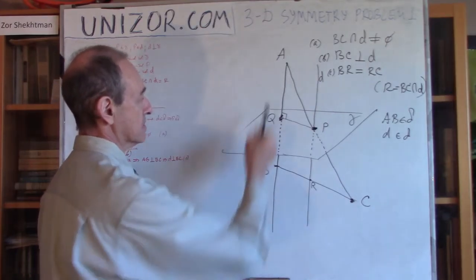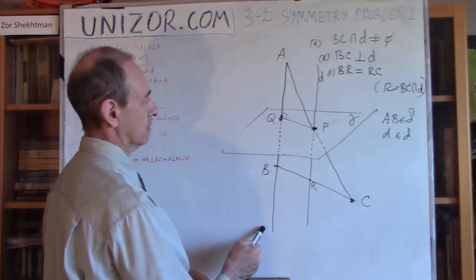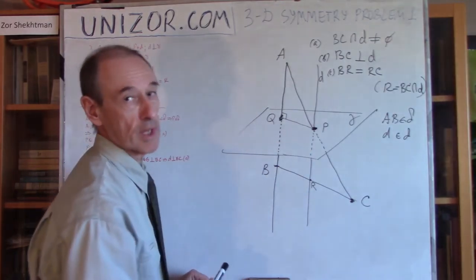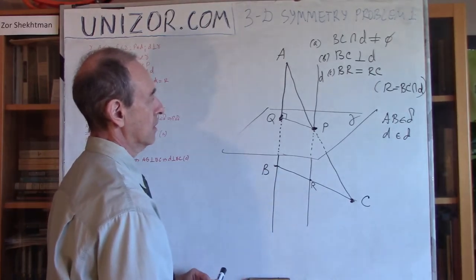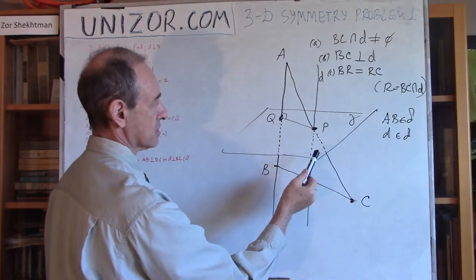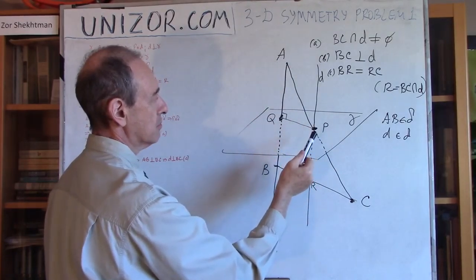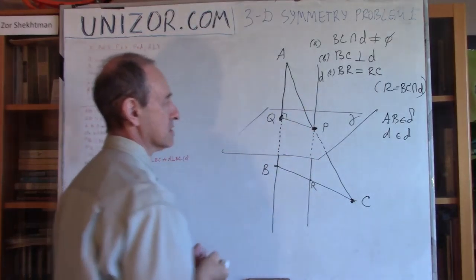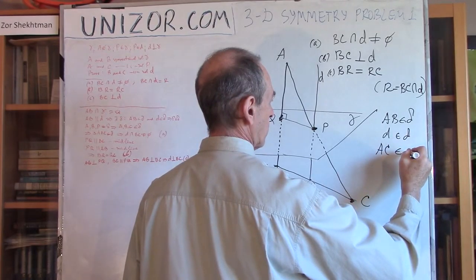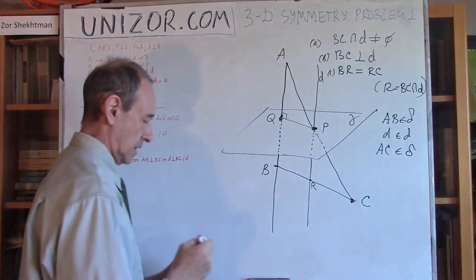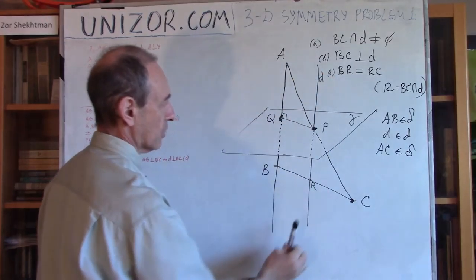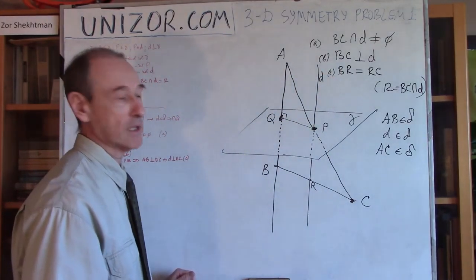Now, what does it mean? Since AB belongs to plane delta, then both A and B belong, and incidentally Q as well, because Q is the midpoint of AB. A belongs, and since P belongs, then point B also belongs to this plane obviously. And since A and P belong, then the whole line AC belongs. So what we have is that AC also belongs to this plane delta. So this belongs, this belongs, and this belongs - everything belongs to plane delta.